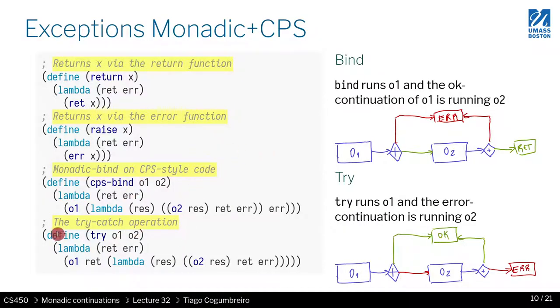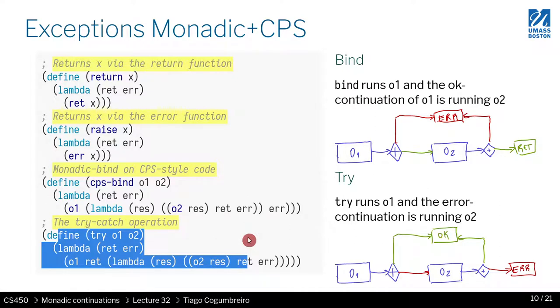So how would we go about and implement try catch? Try catch is very simple, is very interesting the way it works. So let's look at how bind works first so that we can understand how try works.